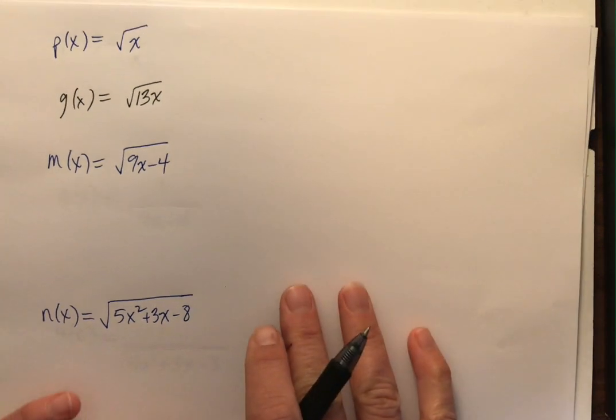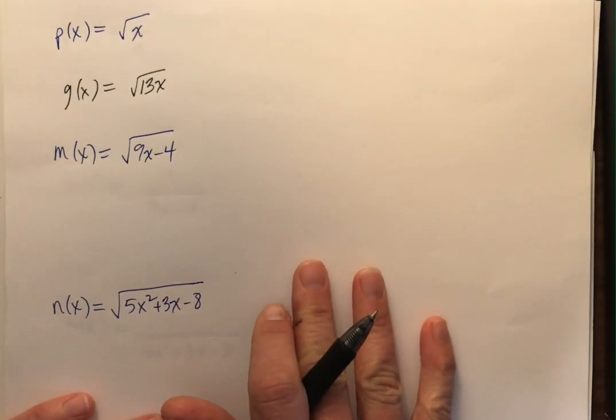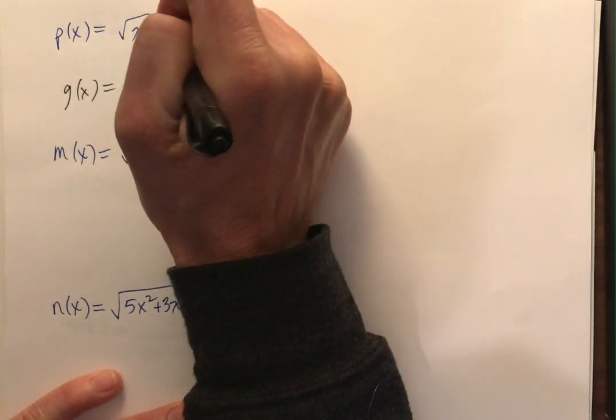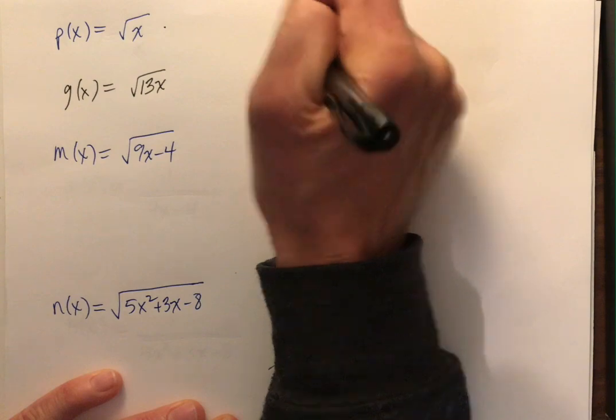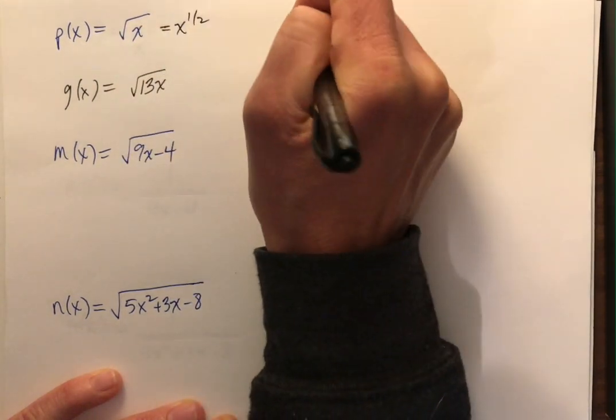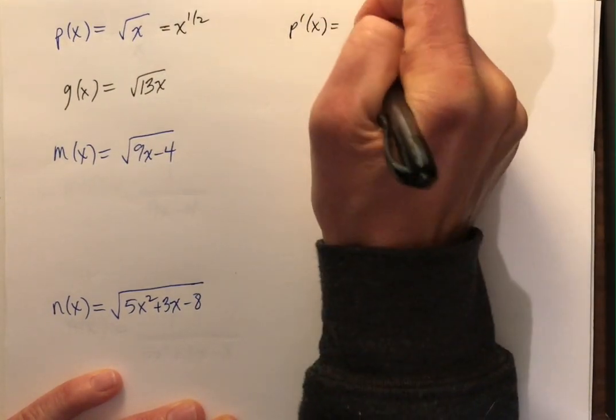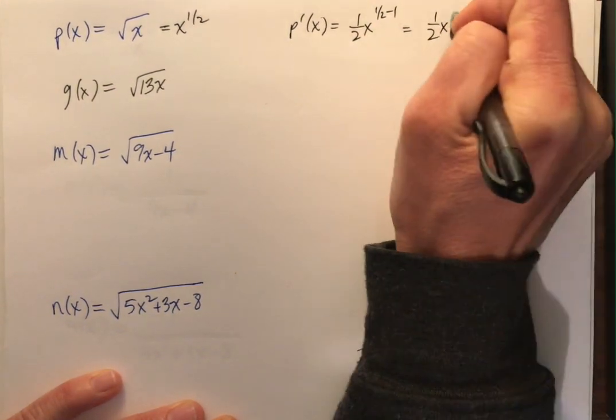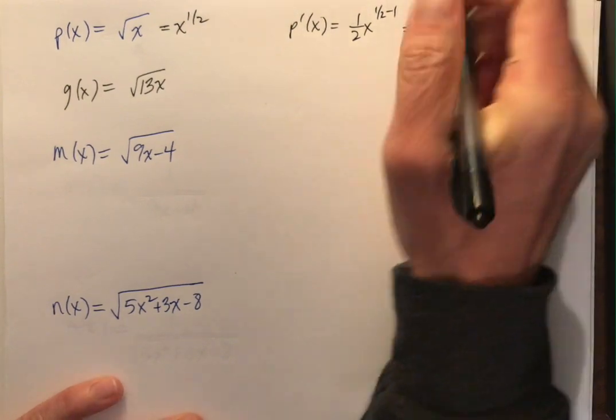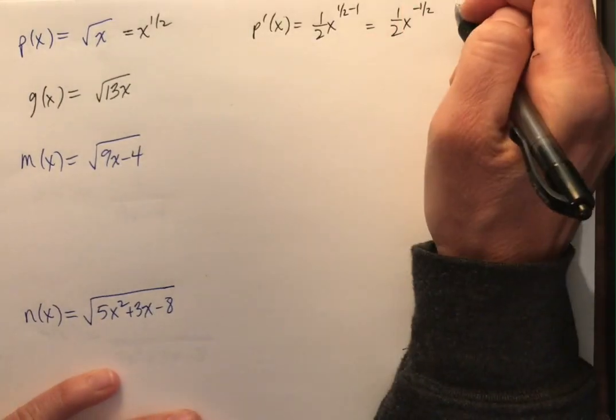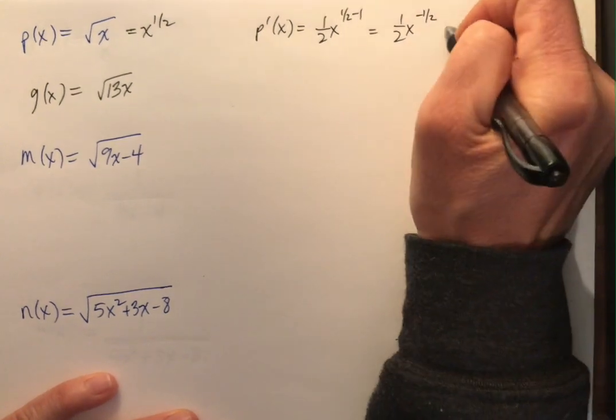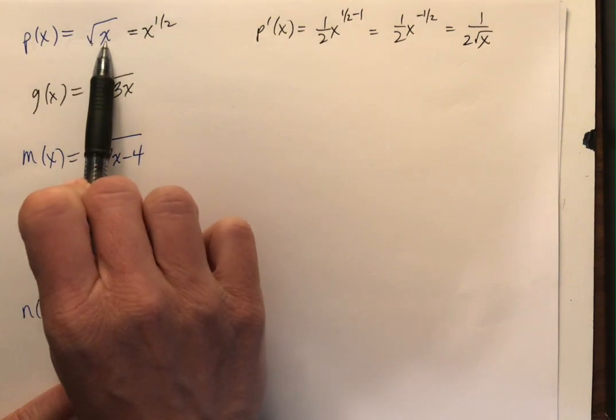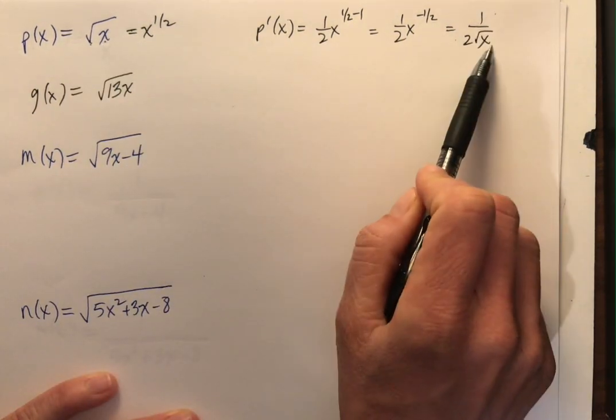So let's keep on trucking. Let's deal with these radical functions. Now, for p of x, I rewrote p of x as x to the 1 half. The derivative then is 1 half x to the 1 half minus 1, which is 1 half x to the negative 1 half, which equals 1 over 2 square root of x. So given p of x is the square root of x, the derivative is 1 over 2 times the square root of x.